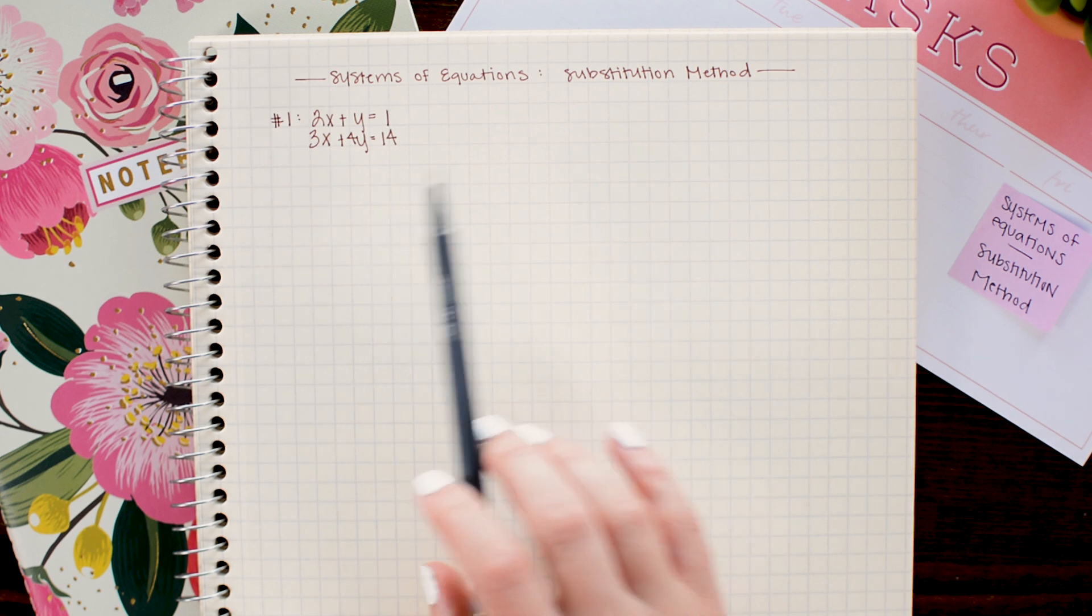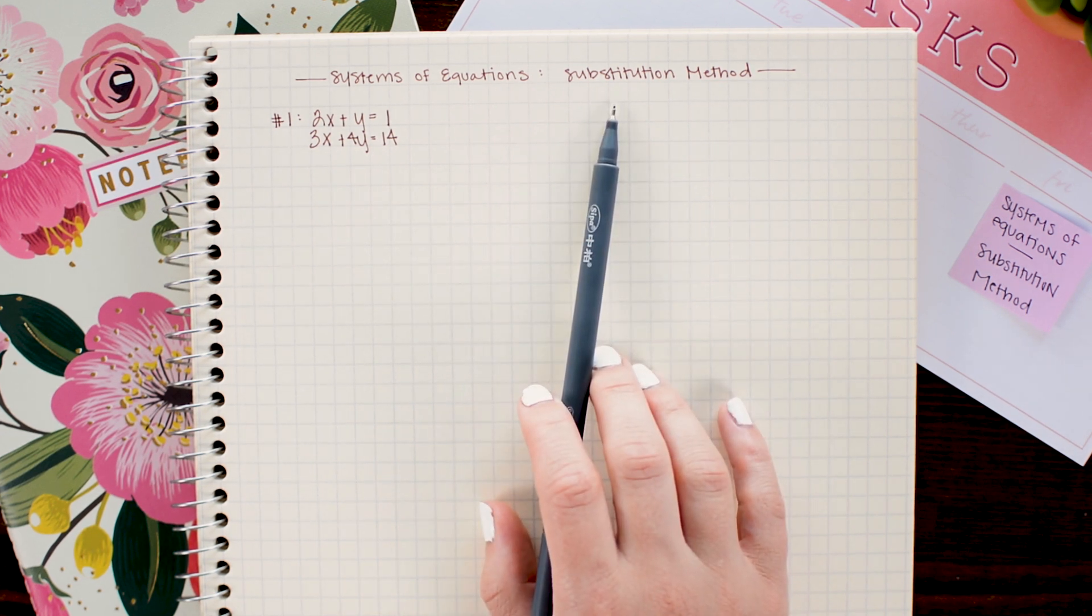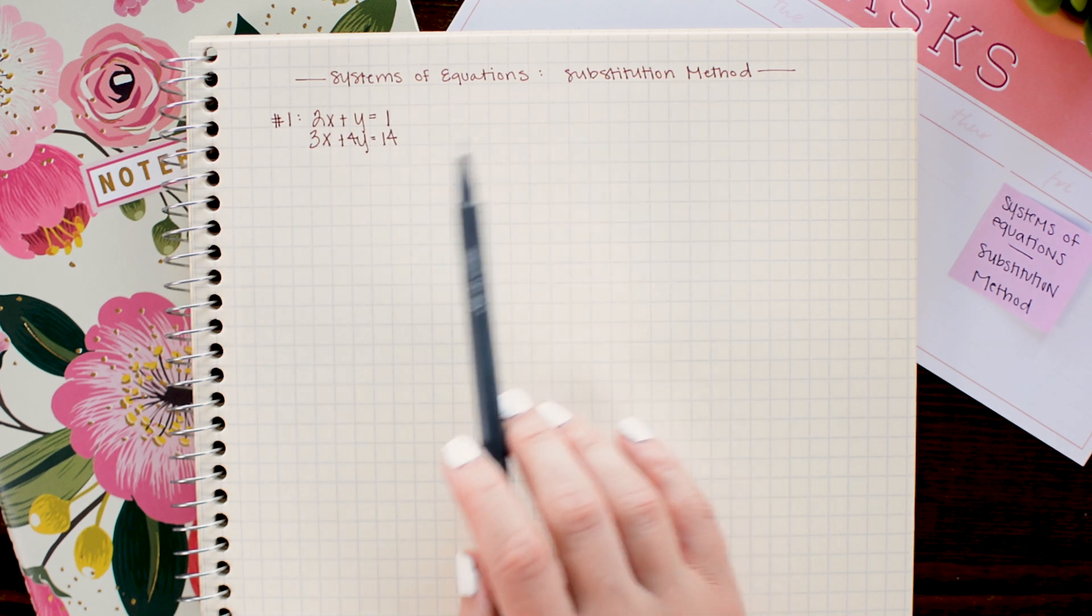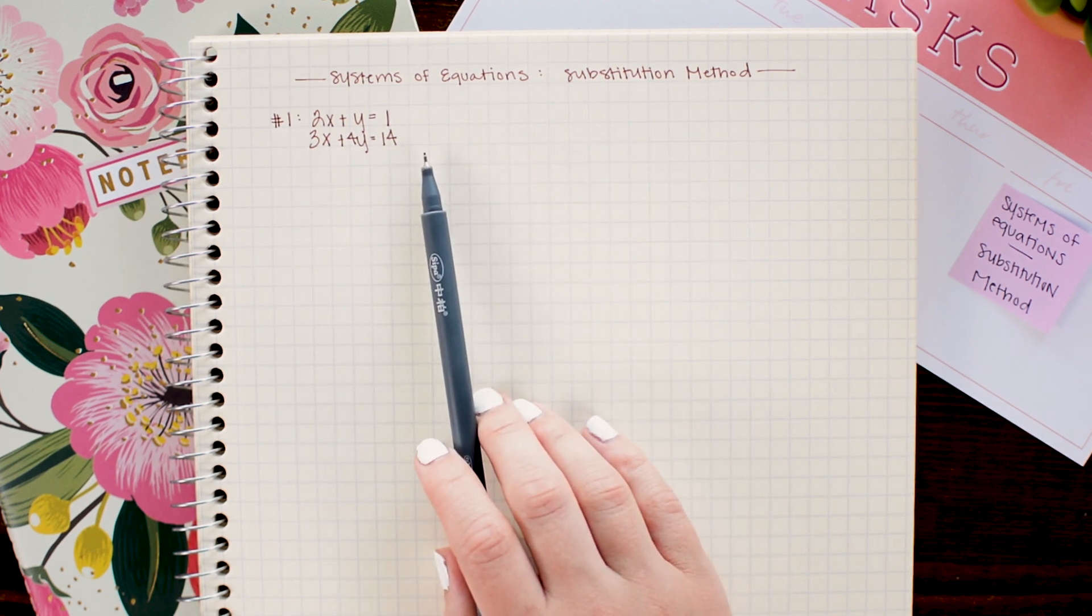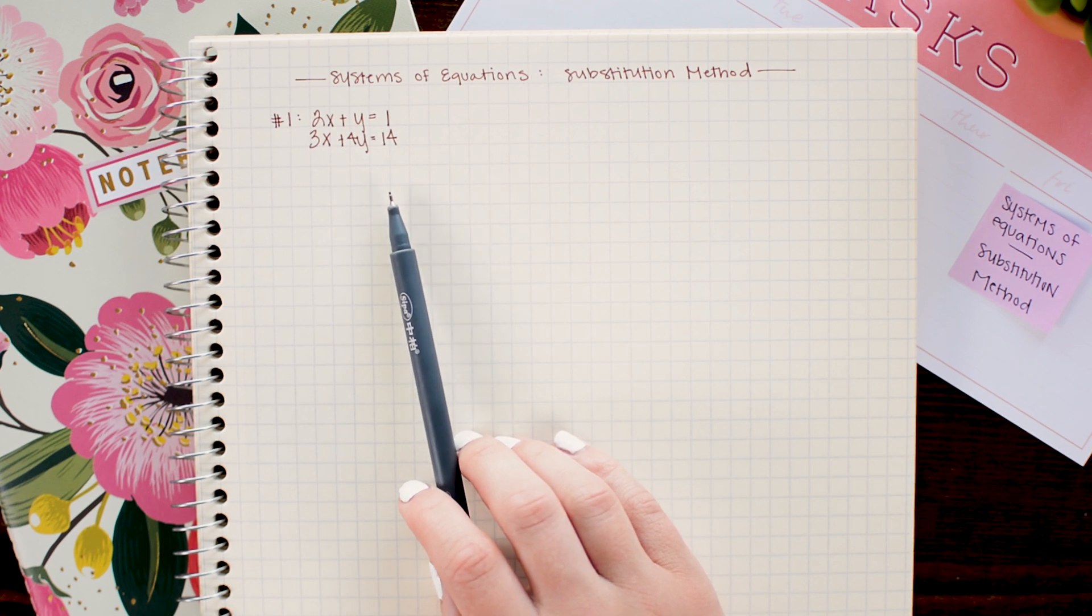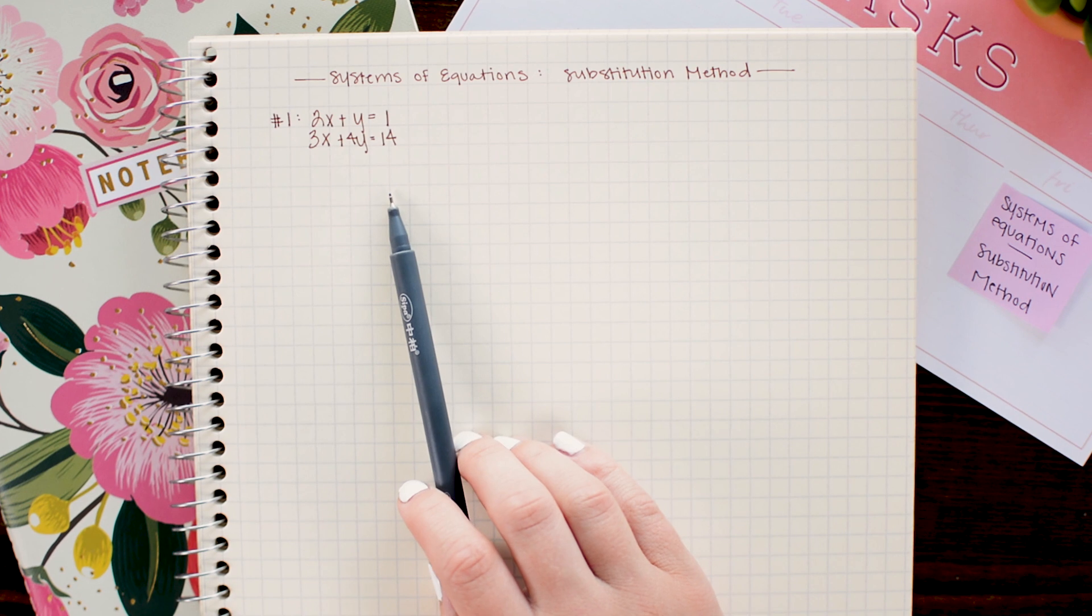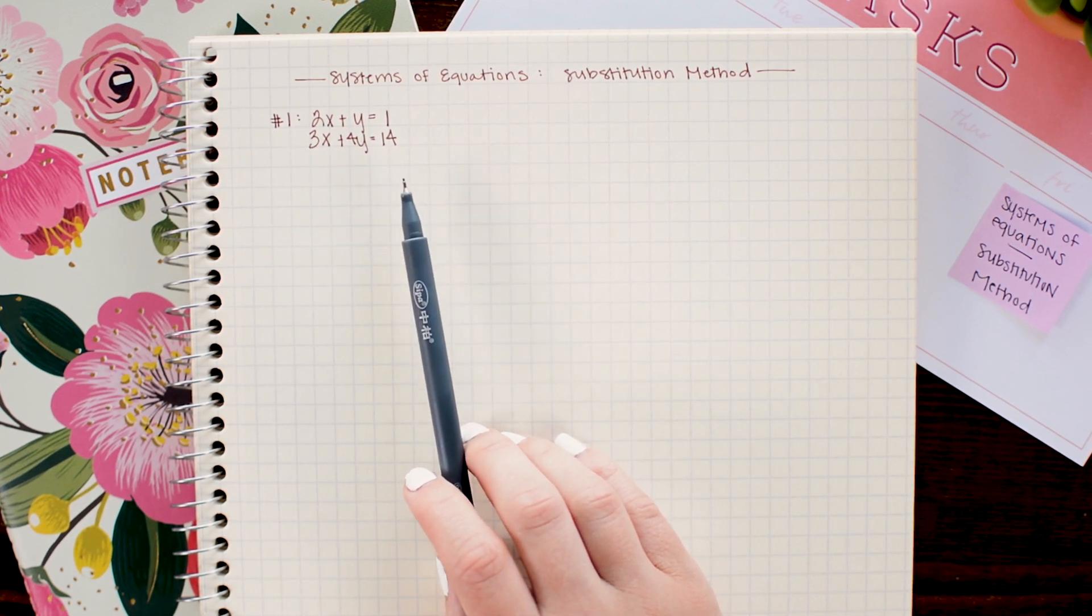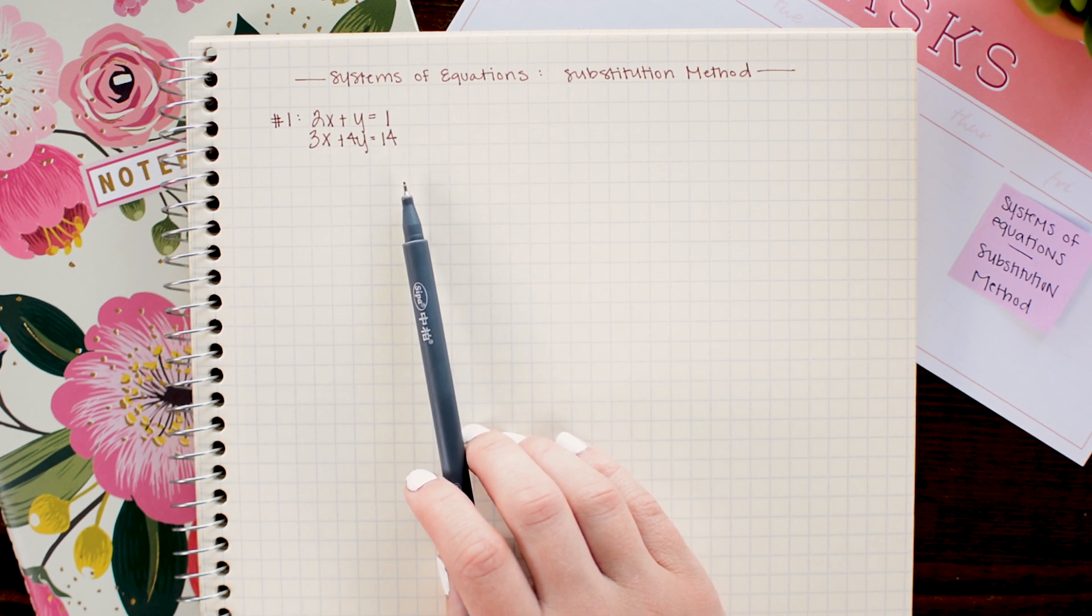So today we are looking at the substitution method and in that method we want to isolate a variable in one of these equations and then substitute that relationship into the other equation. To begin with, you always want to scan your equations and see if there's any nice variables to work with. So if you see a variable that doesn't have a number coefficient written in front, it is most likely the easiest variable to isolate.